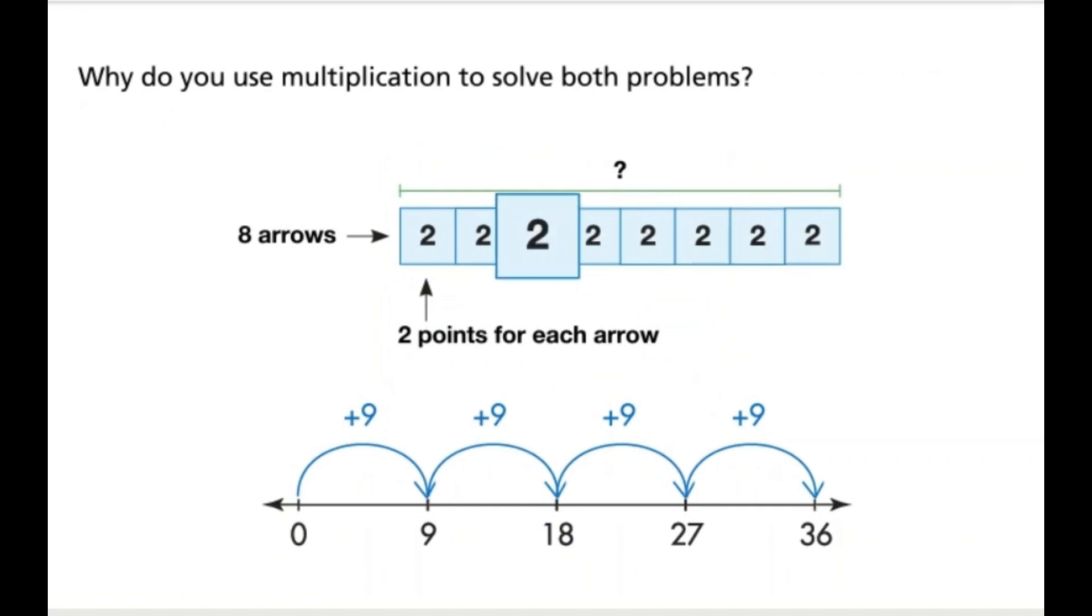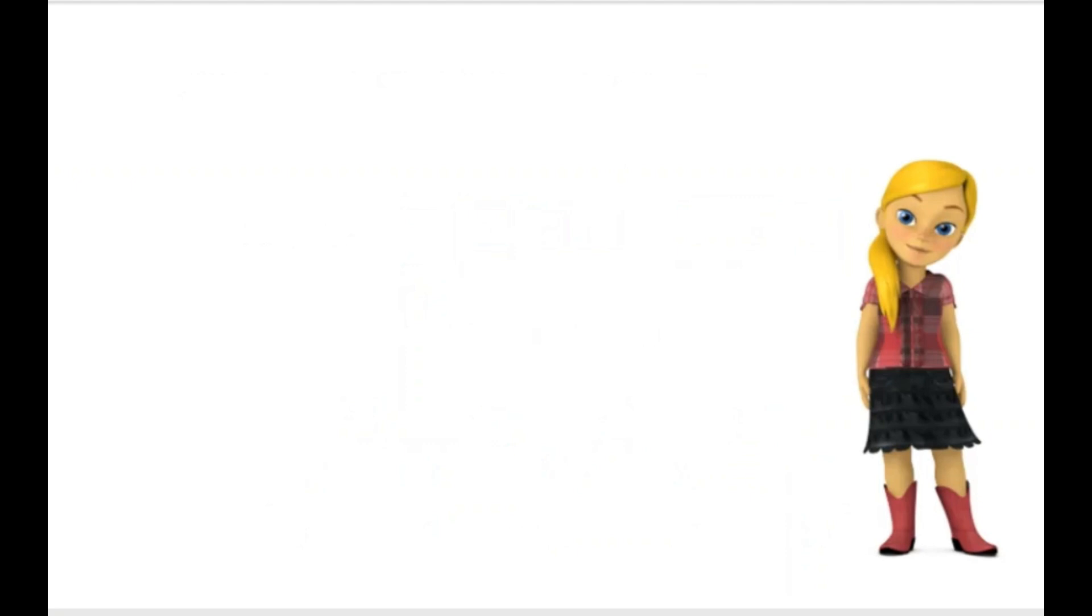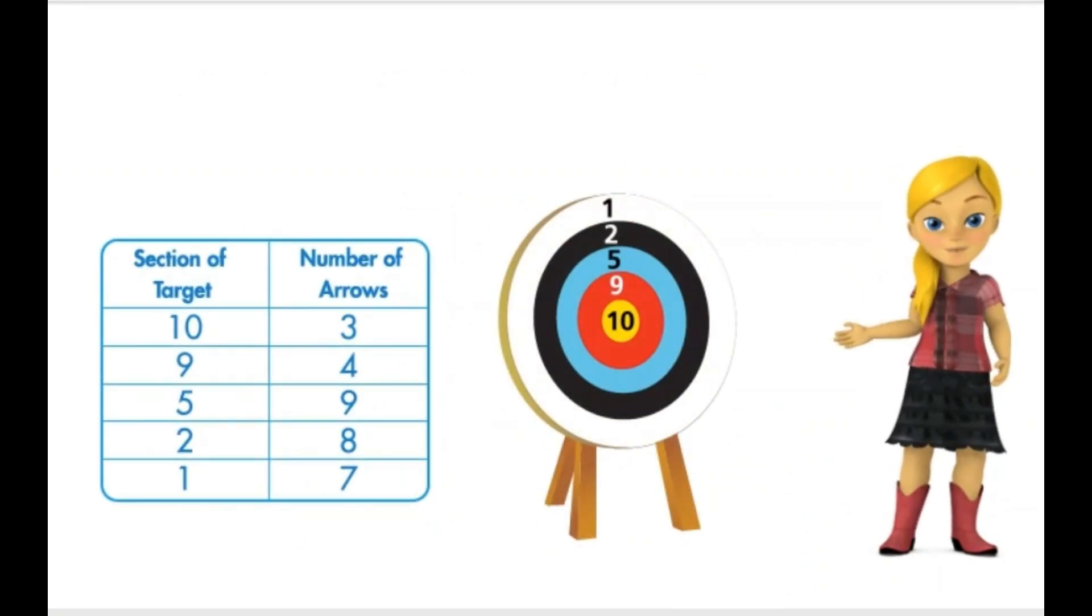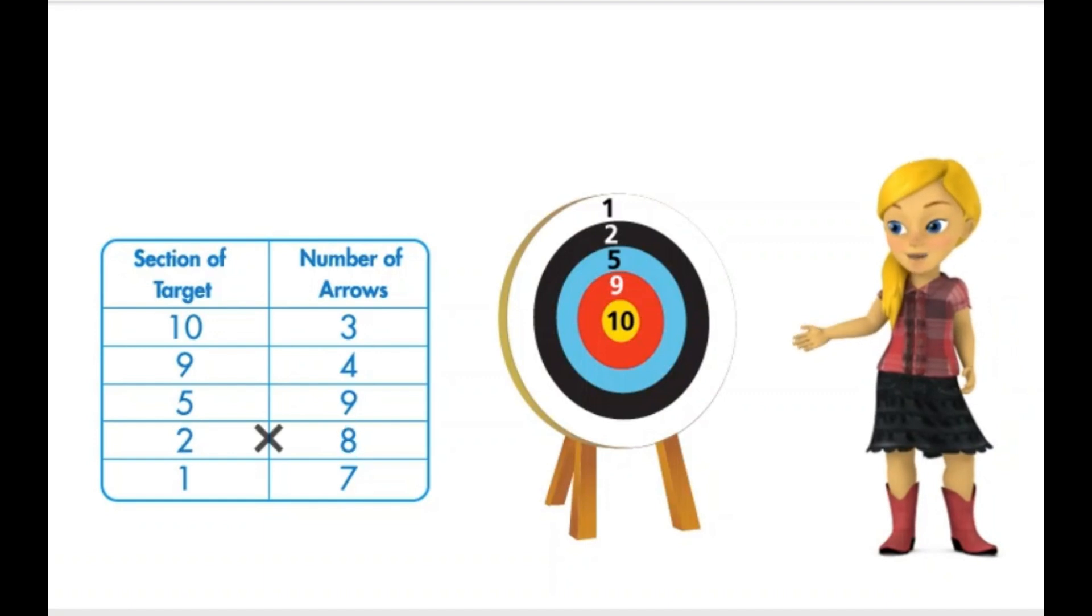Why do you use multiplication to solve both problems? To solve both problems, I am counting equal groups. I look at the table and I see 8 groups of 2 and 4 groups of 9.